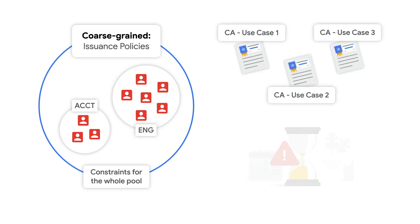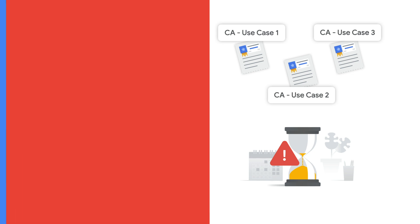This inefficiency leads to needing multiple scoped CAs for different use cases and manual processing of each certificate request. The good news is, with CAs, you can use coarse and fine-grained policy controls together to have even more control over the certificate issuance process and set different restrictions for different needs.